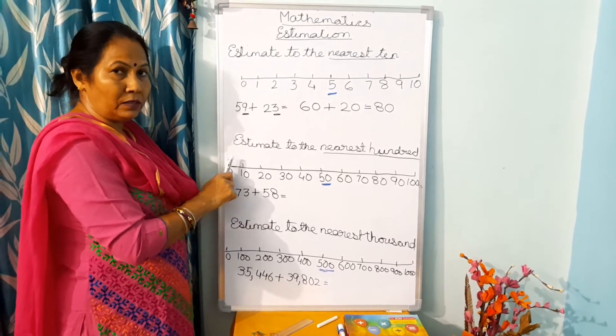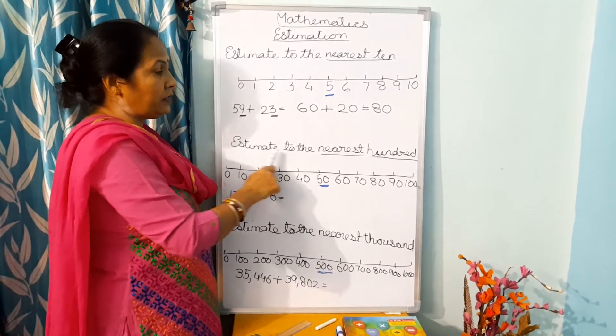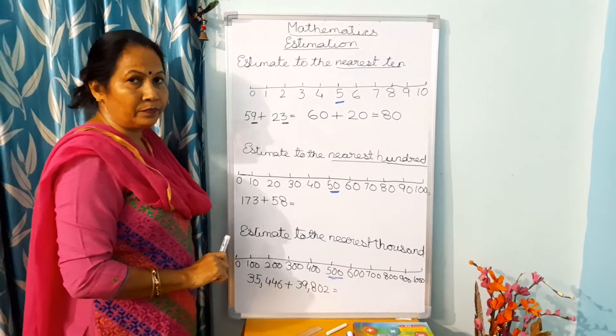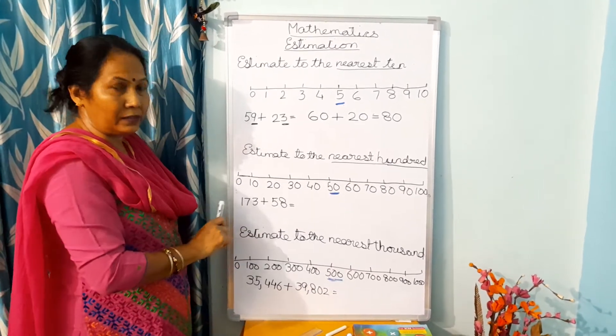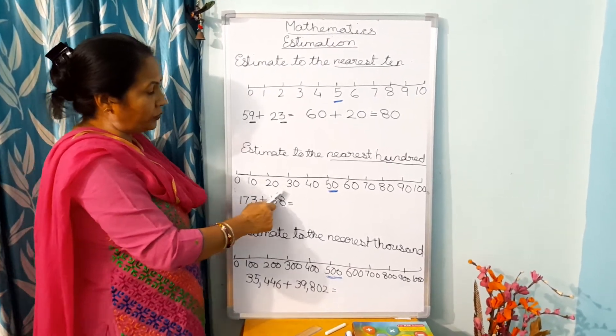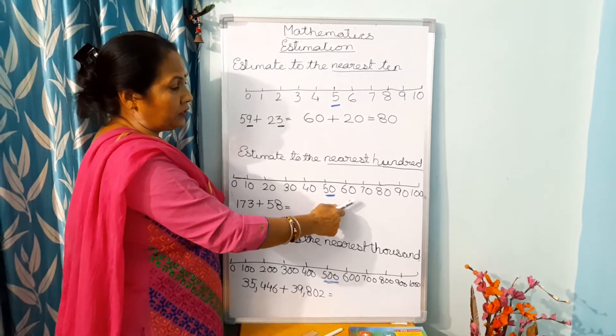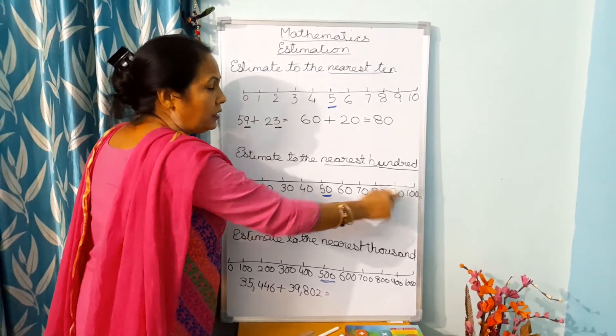Now in the second one you have estimate to the nearest 100. Now you see this number line: 0, 10, 20, 30, 40, 50, 60, 70, 80, 90, 100.